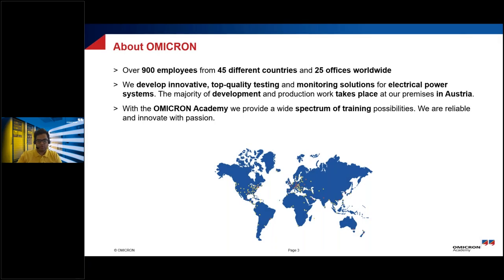A little bit about Omicron. We are a team of 900 employees in 25 different locations and offices, covering the world market. We also have a lot of sales partners who are part of our attendees today — they are a very vital link for us to cater to such a broad market. As a company, we strive to develop innovative products of very high quality, mostly in testing and monitoring for the power system. The major development work happens in Klaus, Austria, where our factory is.